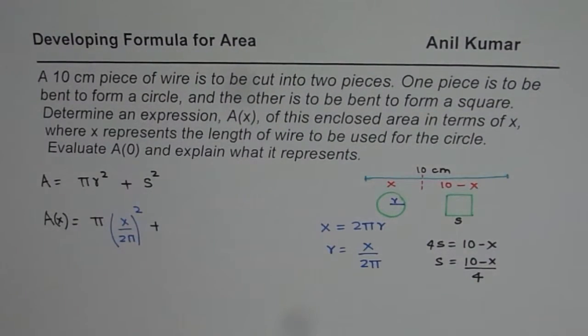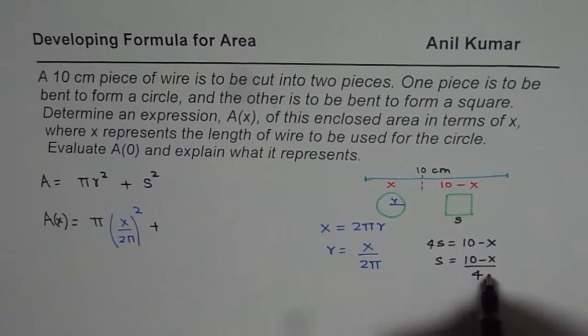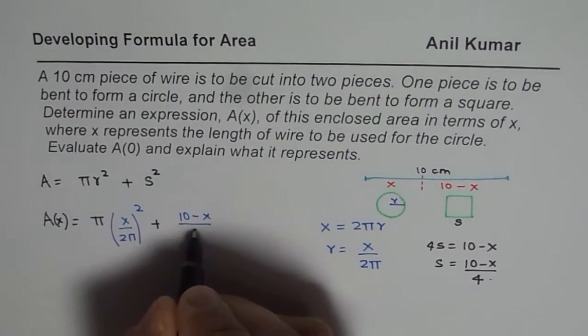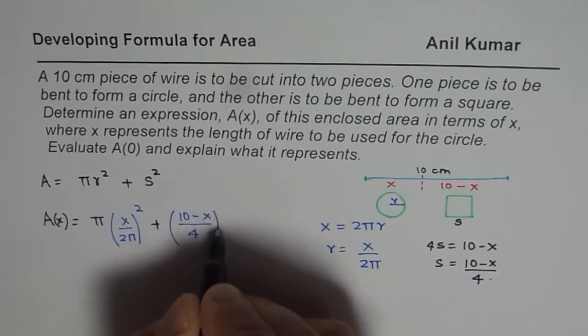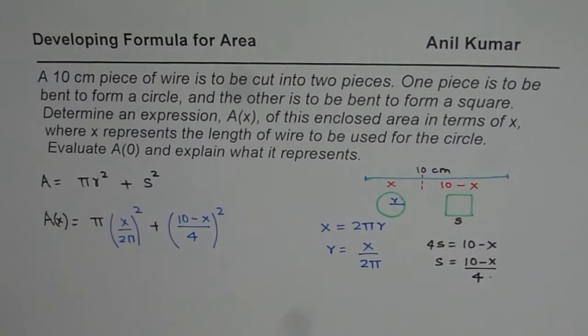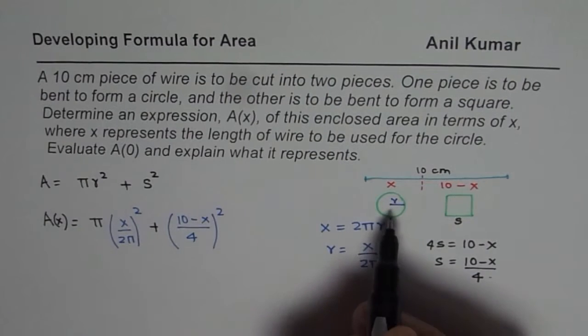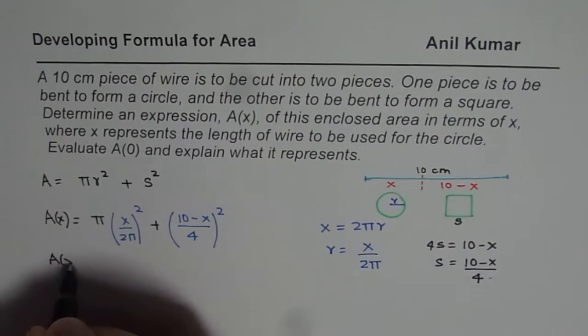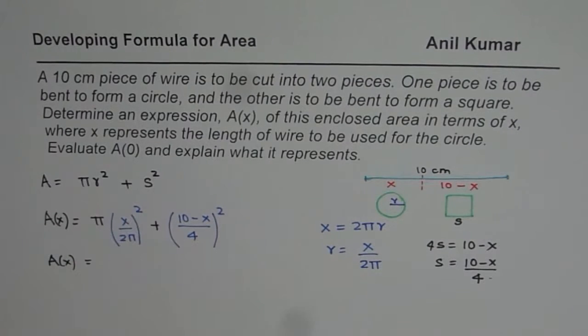Now side is 10 minus x. So I will replace this by the other expression: (10-x)/4 whole square. So we replaced s with this variable. So that is how we get an expression which is the combined area of these two shapes. Area A equals to, we can simplify this.